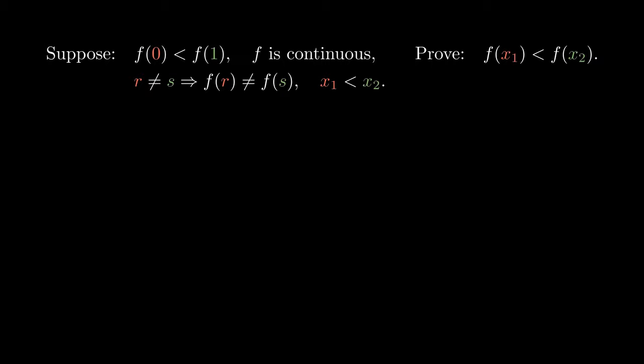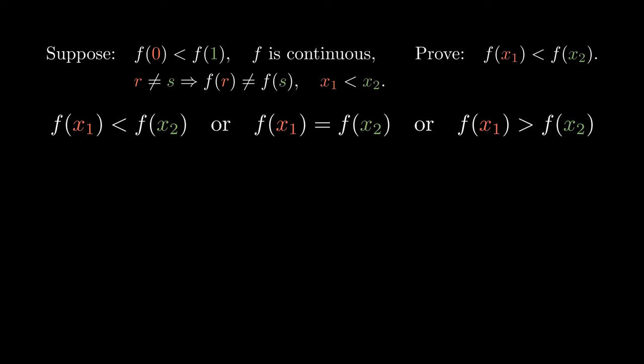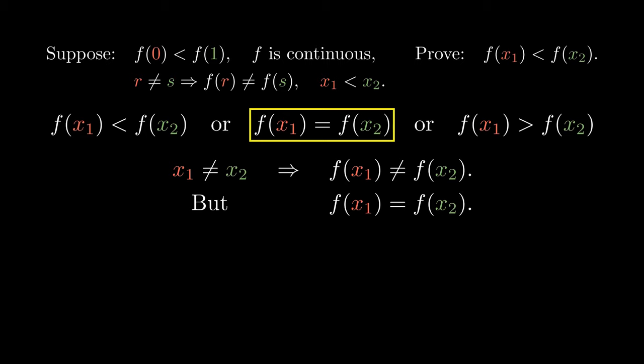When plugging in the inputs, the outputs could either be smaller, equal, or larger. If the outputs are equal to each other, since x1 is smaller than x2, the inputs are different. By our assumption, the outputs ought to be different as well. However, under our supposed condition, the outputs turn out to be the same. So we have a result saying that the outputs are same and not the same at the same time. This is clearly impossible, which allows us to rule out the case when the outputs are the same.